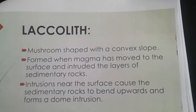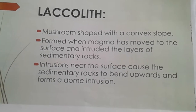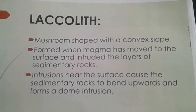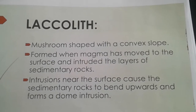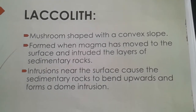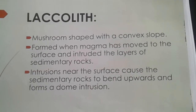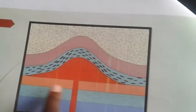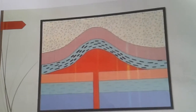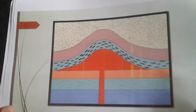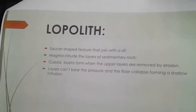The second feature is the laccolith, which is a mushroom-shaped platform. It is formed in the earth's crust when magma is intruded into layers of sedimentary rocks and solidifies. The sedimentary rocks tend to bend upwards and form this dome intrusion. When exposed to the surface it also becomes a dome. The difference between the laccolith and the batholith is that the laccolith is smaller in size — the batholith is the largest of the landforms.